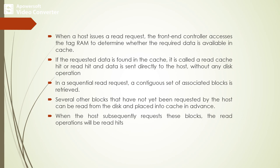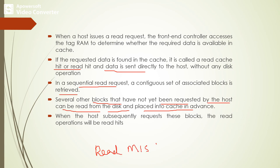When a host issues a read request, the front-end controller accesses the tag RAM to determine whether the required data is available in the cache or not. If the requested data is found, that is called a cache hit or read hit. At that instant, the data is directly sent to the host without any disk operations. In a sequential read request, a contiguous set of associated blocks is retrieved; several other blocks not yet requested by the host can be read from the disk and placed into the cache in advance.